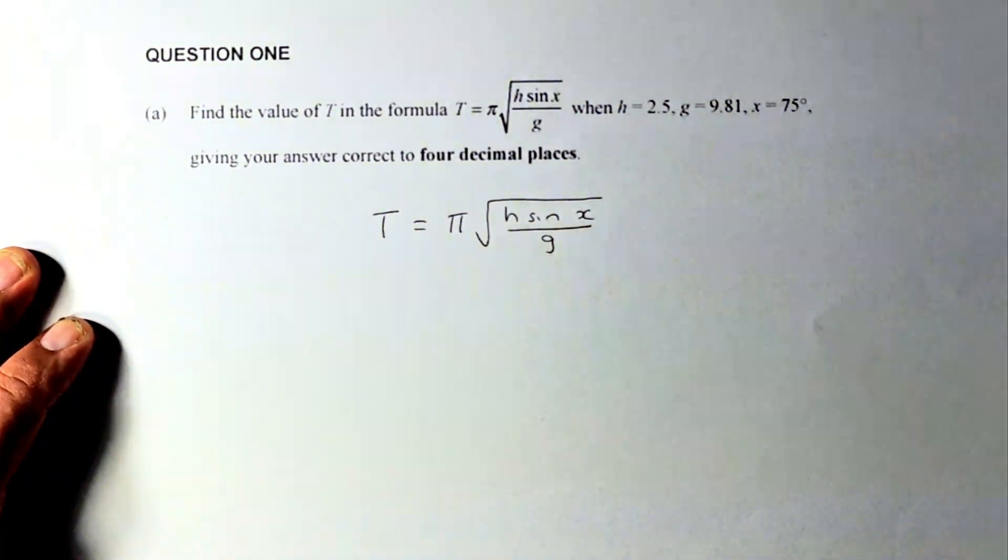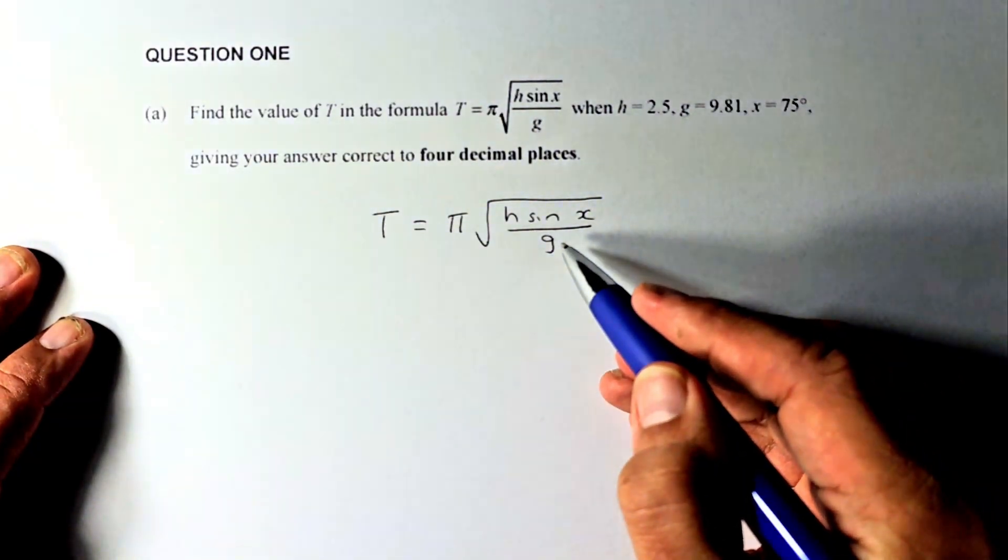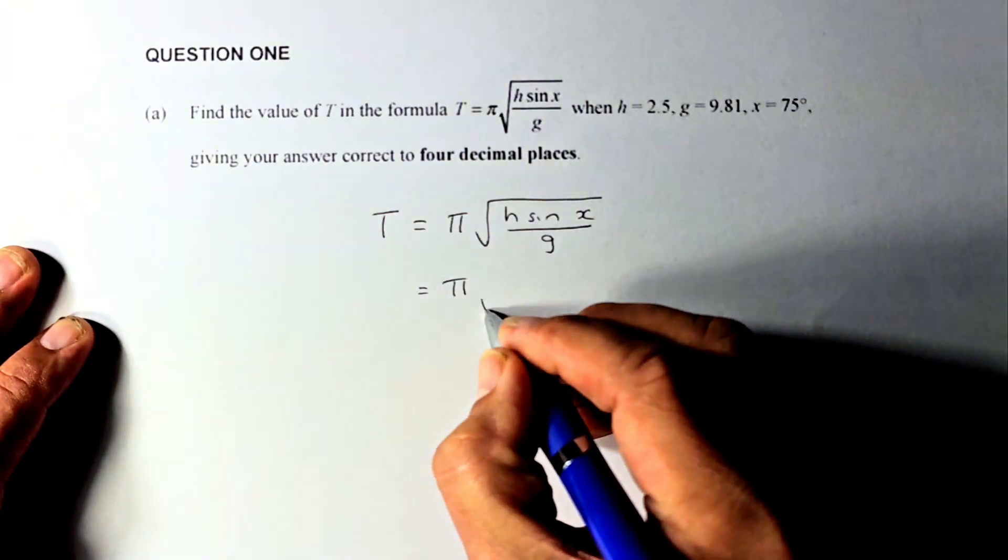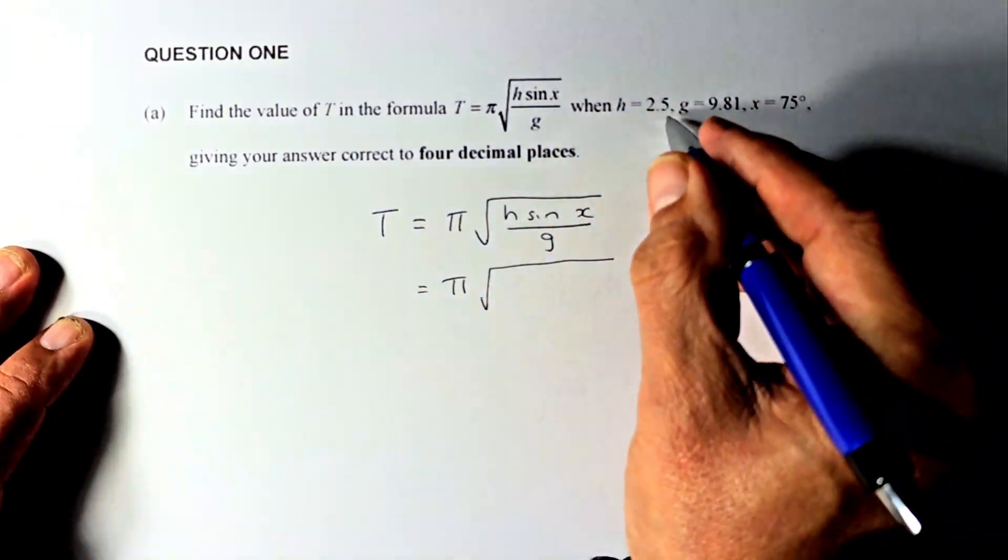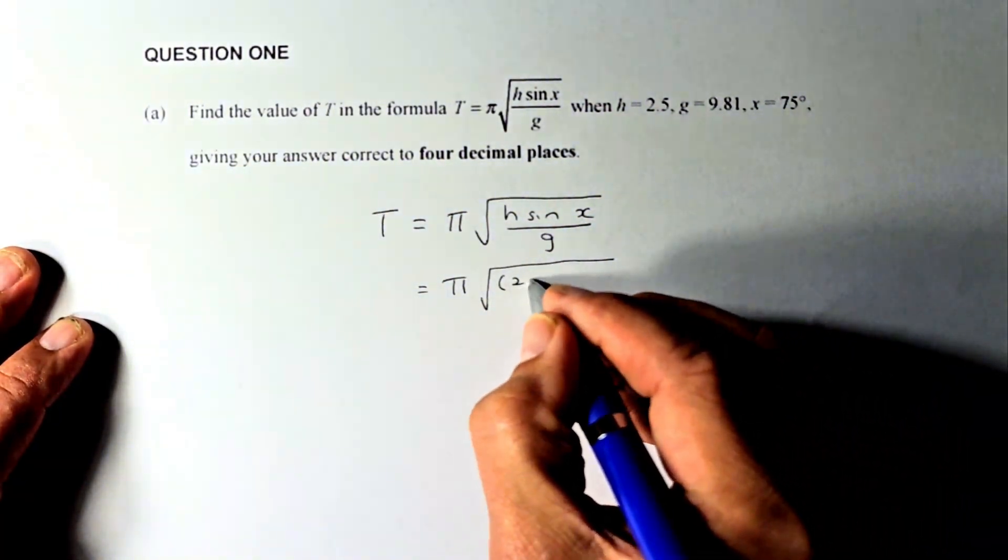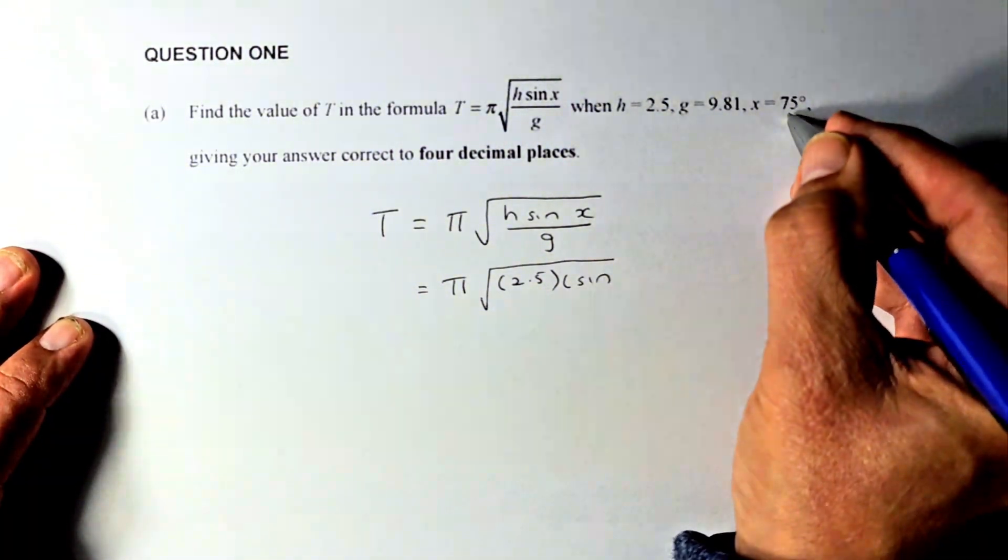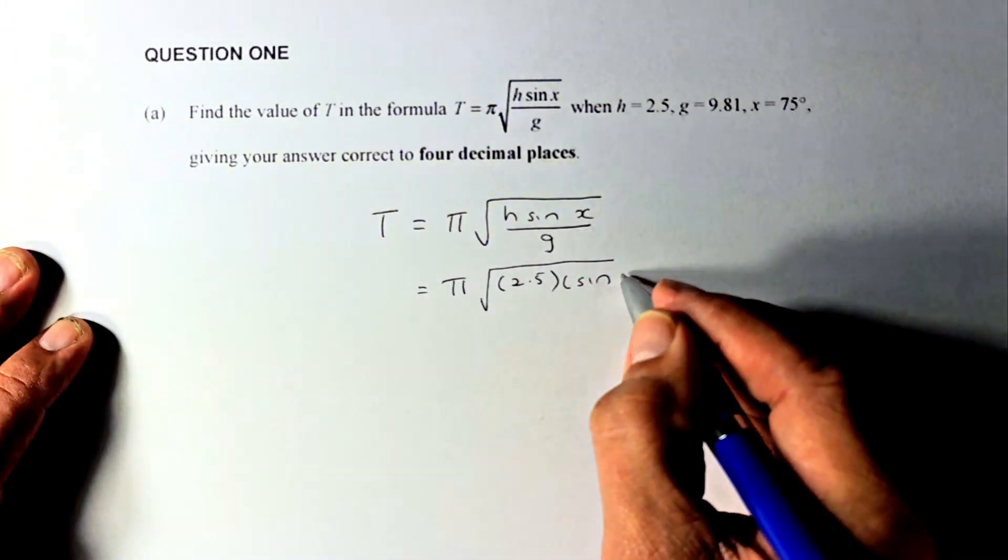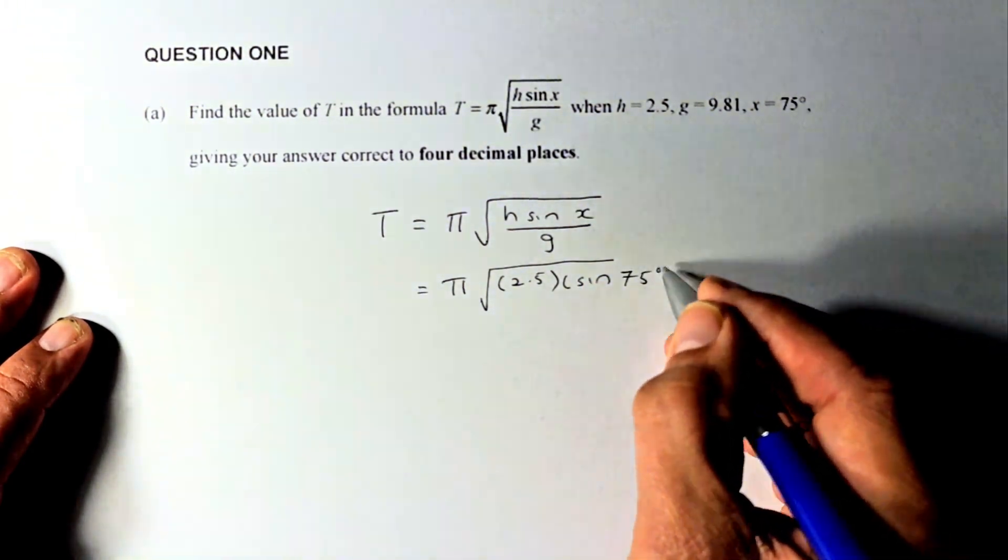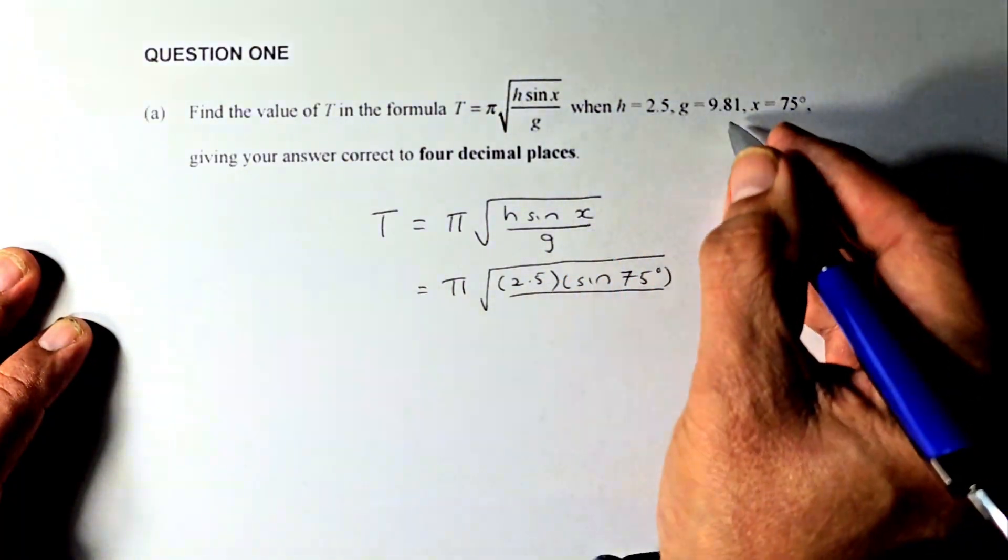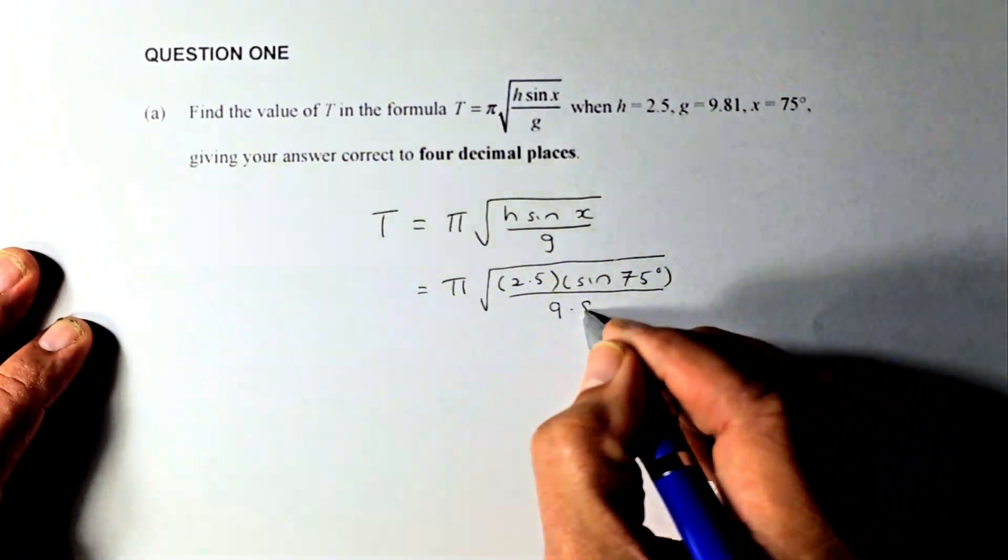So the next thing we're going to do, we're going to substitute all the values here into this equation. So pi remains as pi. The square root of h is replaced by 2.5. I suggest you put a bracket 2.5 and then bracket sin 75 degrees, and then we're going to divide the whole equation by g which is 9.81.